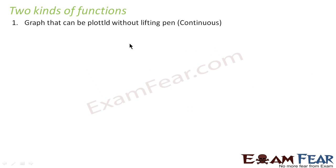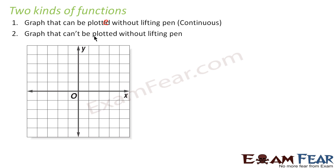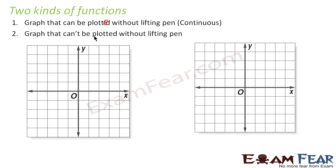There are two kinds of functions. In the first case, the graph can be plotted without lifting the pen. For example, y = x is a graph that passes through the origin, and you can plot it without ever lifting your pen — I started from one point and drew the whole graph continuously.